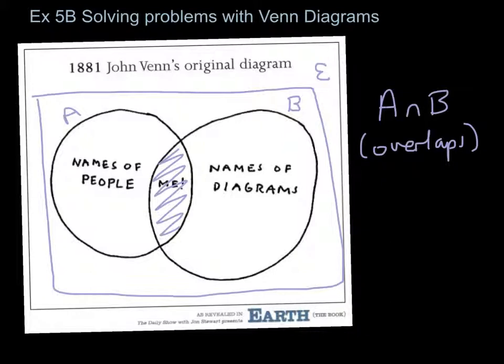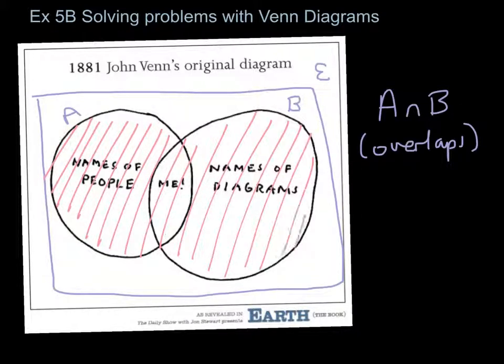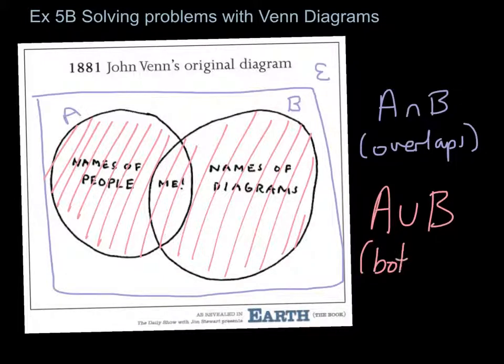Other regions in a Venn diagram we're going to use would be this one where you'd have the two sets combined, and that's what we call the union of the two sets. So that's where the stuff is in both.